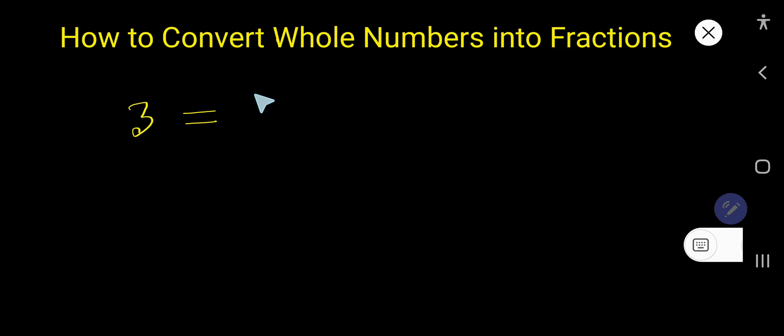If you have a whole number and want to express it as a fraction, you need to take one as a denominator. So this is the fractional form of three. Also, if you multiply this numerator and denominator by the same number, then you will get another fraction: six over two. So this six over two, three over one, and three is the same thing.